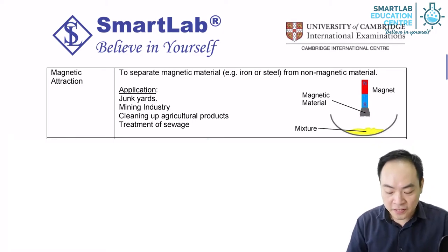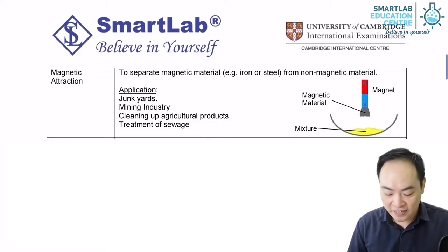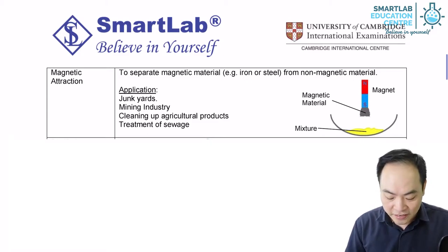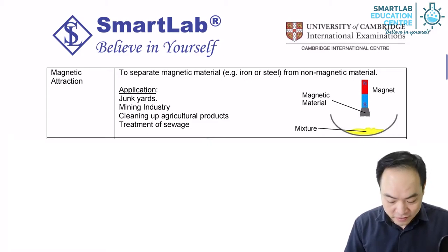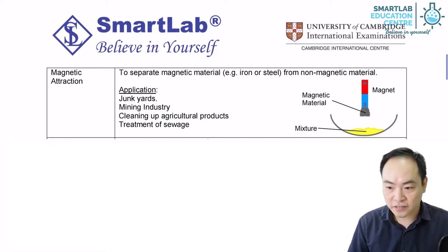Magnetic materials are materials which can be attracted by a magnet easily. Iron, nickel, steel, and cobalt are magnetic substances as they can be attracted by a magnet.